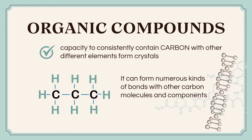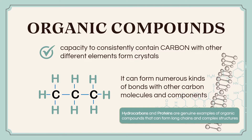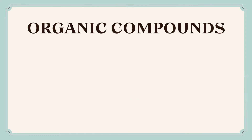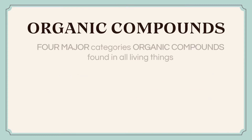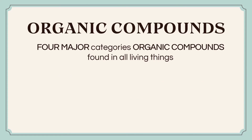For example, hydrogen, oxygen, nitrogen, phosphorus, sulfur, and halogens. Hydrocarbons and proteins are genuine examples of organic compounds that can form long chains and complex structures. Among the numerous types of organic compounds are the four major categories that are found in all living things.